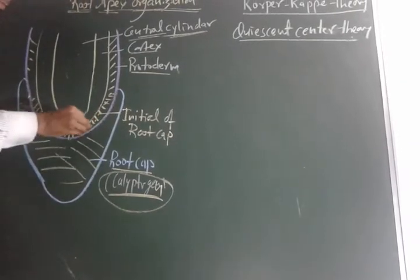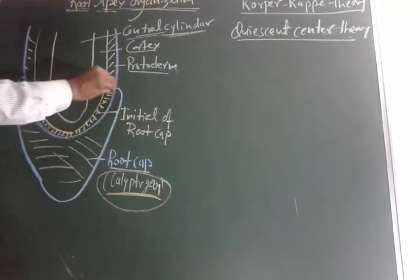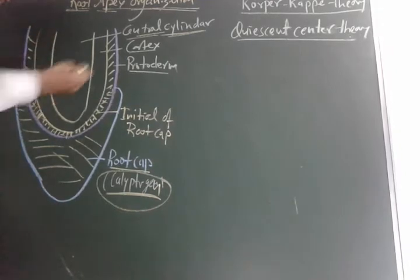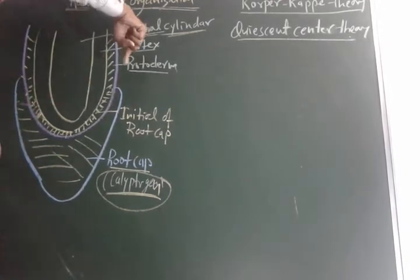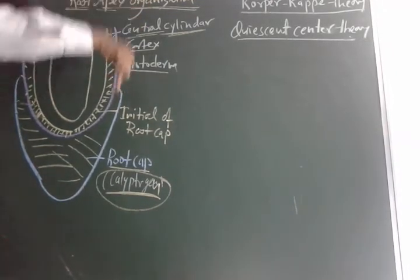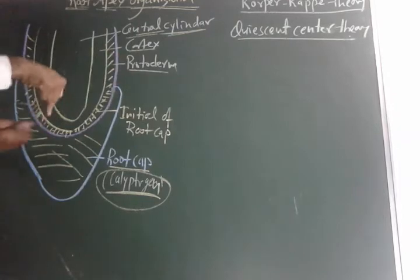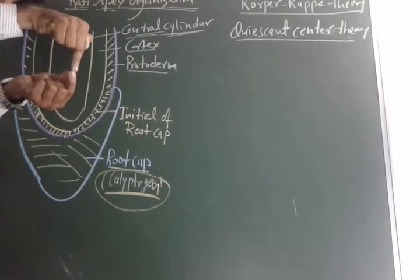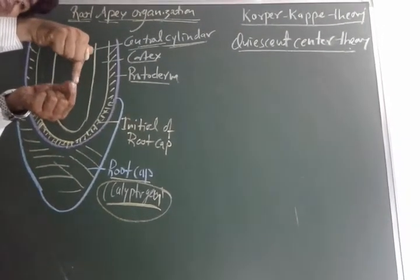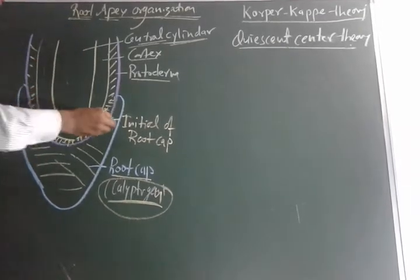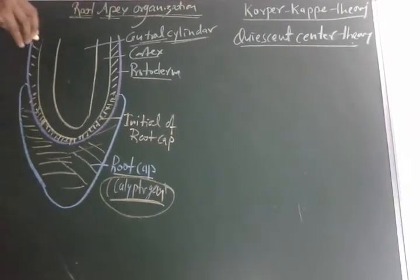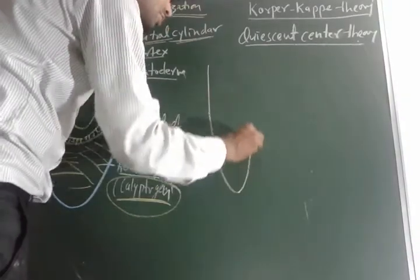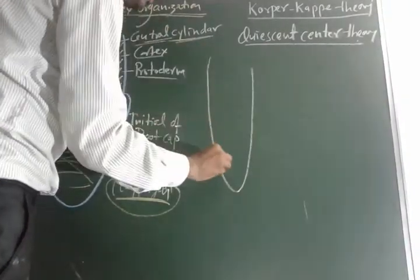The root cap protects the new cells as the root penetrates the soil. As the root pushes through the soil, the outermost cells get worn away, and the root cap protects those cells. In the root system there are three zones.